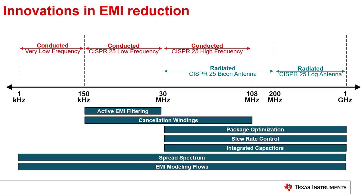To break this trade-off and obtain the combined benefits of high power density, high efficiency, and low EMI, a host of techniques — as listed here in this slide — are employed by the switching converters and controllers built by Texas Instruments. These techniques are tailored to specific frequency bands of interest and are described in depth in the follow-on videos available in this low EMI video series.